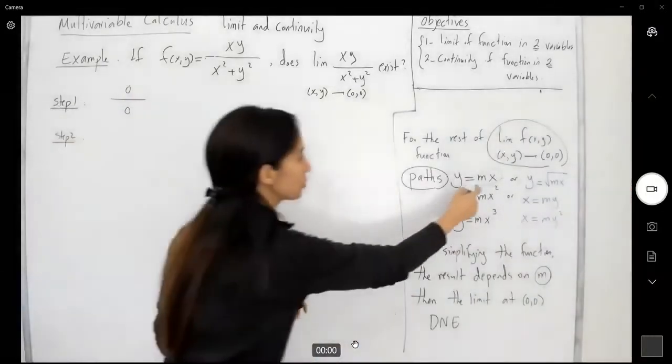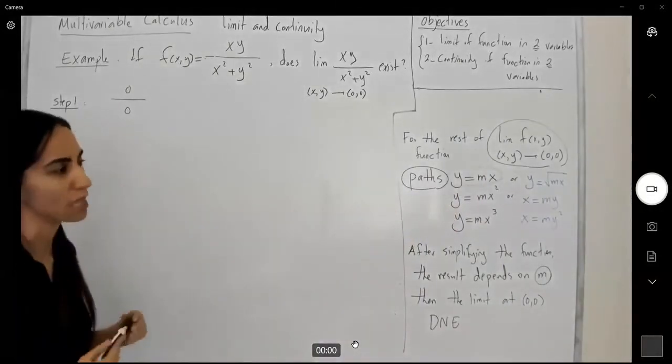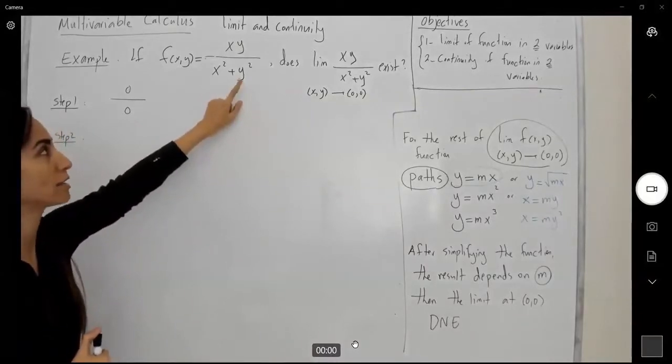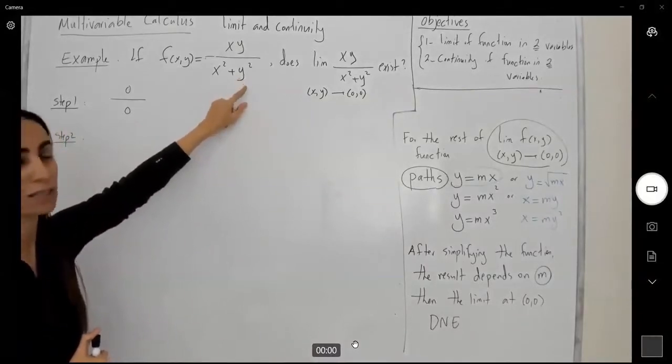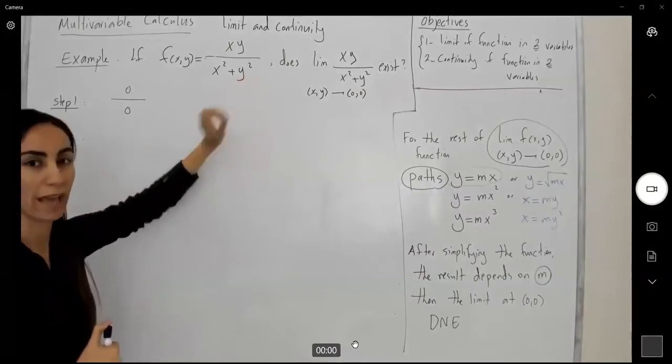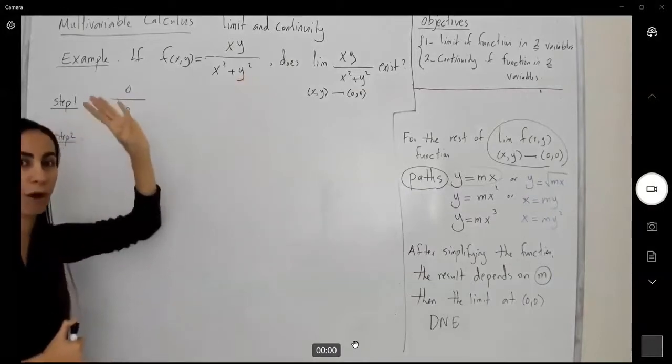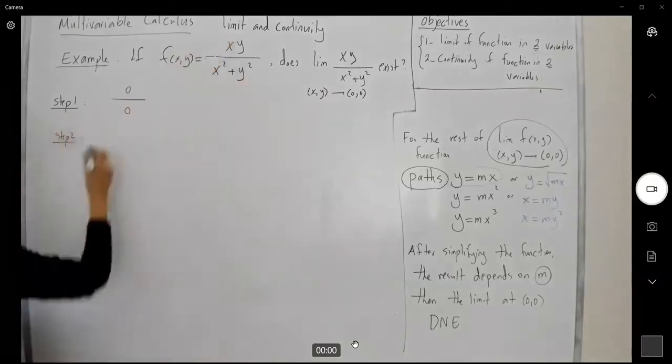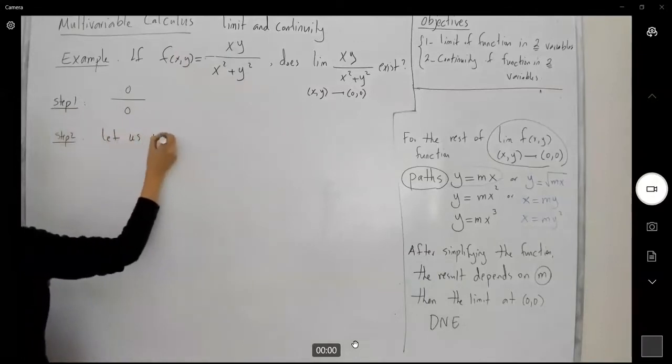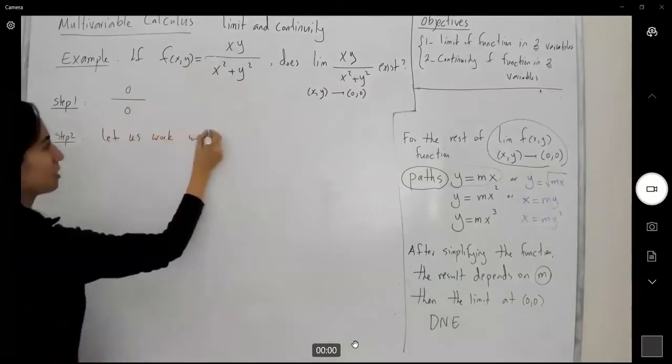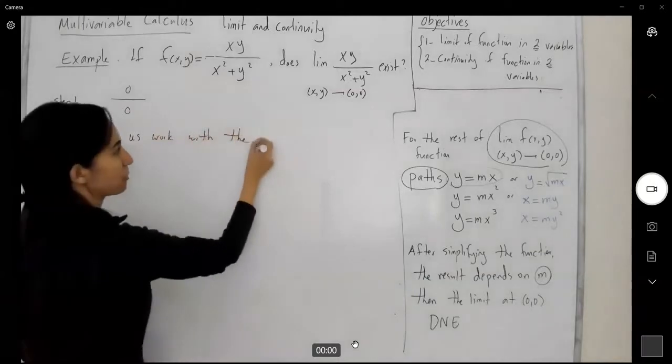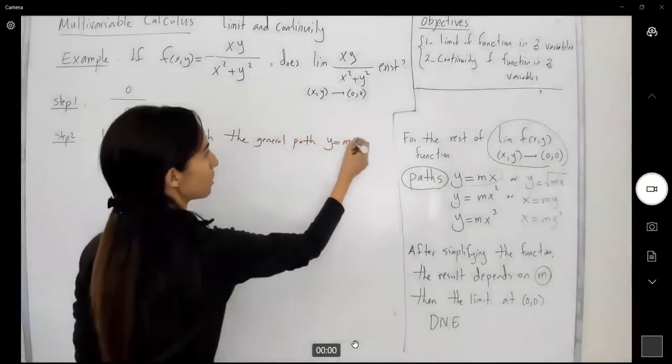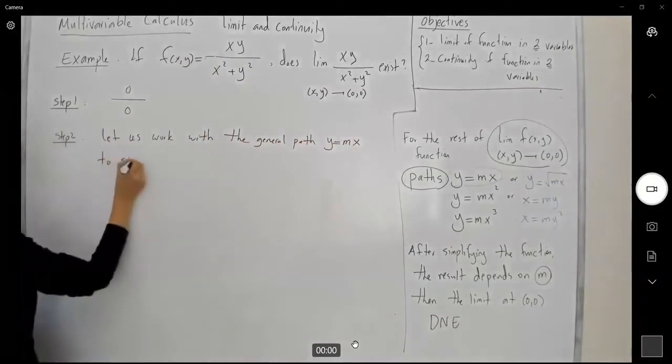I'm going to use y equals mx. I'm not going to choose mx squared because under the denominator, if I choose mx squared, I get mx to the fourth, so my x goes to the fourth power. It doesn't help me simplify this function. So let us work with the general path y equals mx to simplify the function.